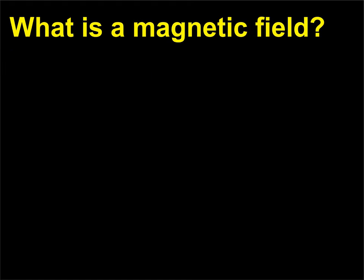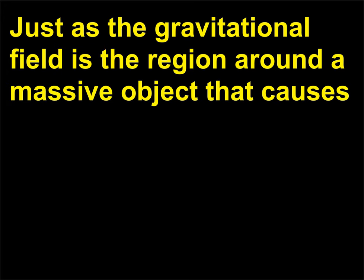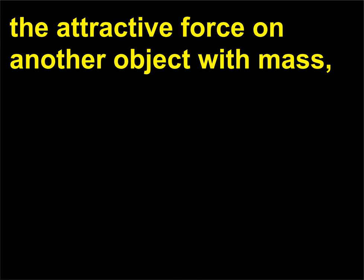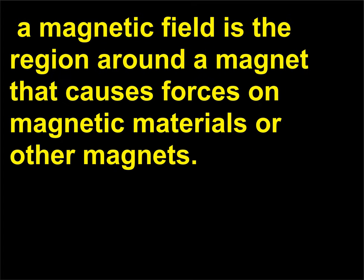What is a magnetic field? Just as the gravitational field is the region around a massive object that causes the attractive force on another object with mass, a magnetic field is the region around a magnet that causes forces on magnetic materials or other magnets.